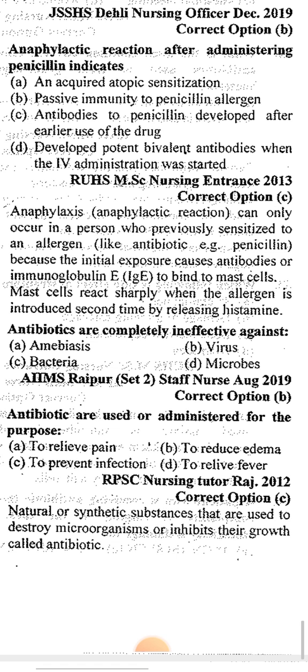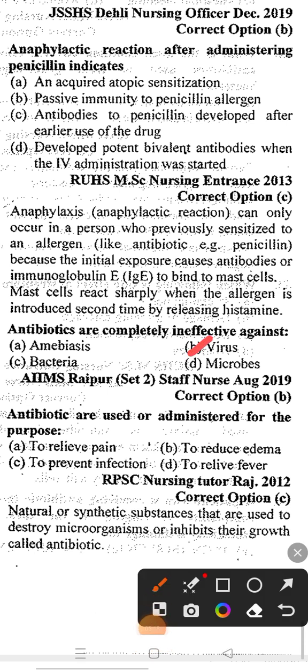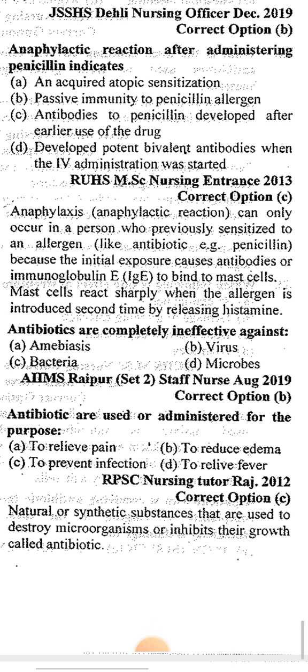The next question: antibiotics are completely ineffective against — Option A: amoebiasis, Option B: virus, Option C: bacteria, Option D: microbes. The correct answer is option B, virus. The next question: antibiotics are used or administered for the purpose of — Option A: to relieve pain, Option B: to reduce edema, Option C: to prevent infection. The correct answer is option C, to prevent infection, because natural and synthetic substances used to destroy microorganisms or inhibit their growth are called antibiotics.